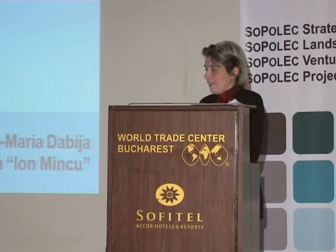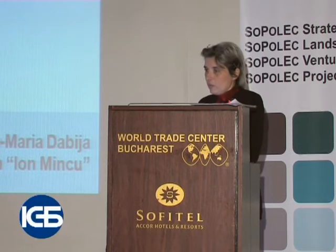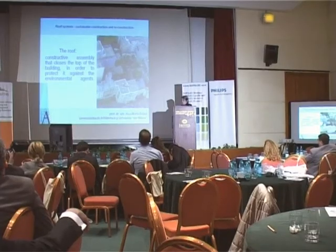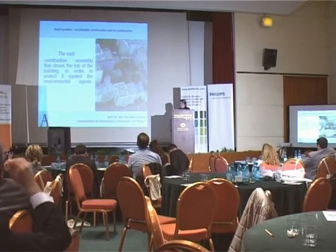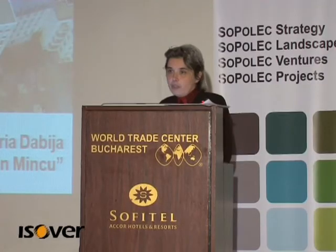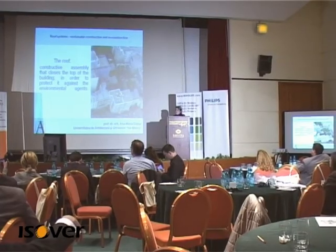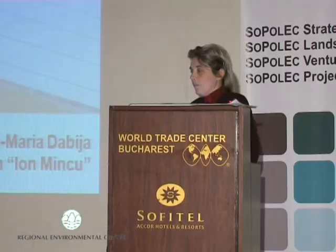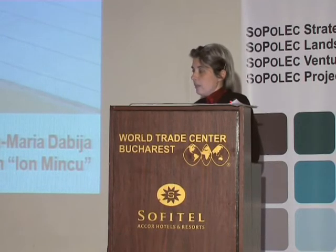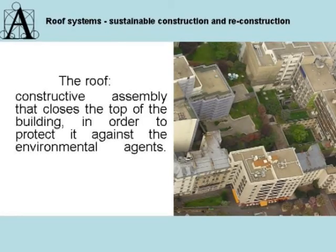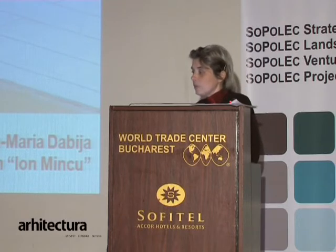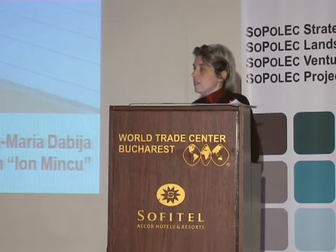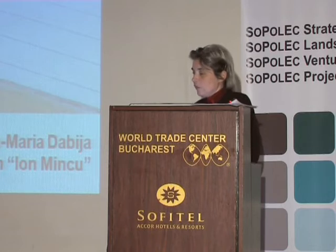We have been doing a lot of studying and experiencing on the walls and windows; maybe we should also focus on the roof. The roof is a constructive assembly that closes the top of the building in order to protect against environmental agents, but apart from this main function, it can also achieve natural ventilation of the inner space, natural light, protection against fire, and very important in sustainable construction: hygrothermal protection, acoustic protection, natural ventilation, and natural light.